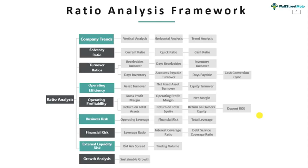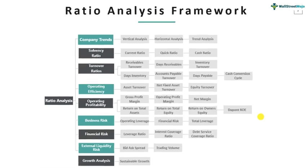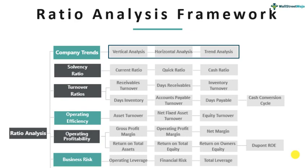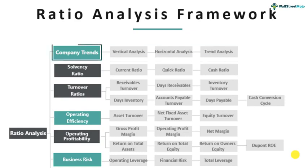When you look at this ratio analysis, there are three or four bifurcations to consider. First is how to analyze the company's trend. On the top, you can see things like vertical analysis, horizontal analysis, and trend analysis. This helps you identify the right kind of questions — whether the company is growing or not, whether certain line items like gross profits are shrinking or increasing. These different approaches help in analyzing various aspects, which we'll discuss under company trends.